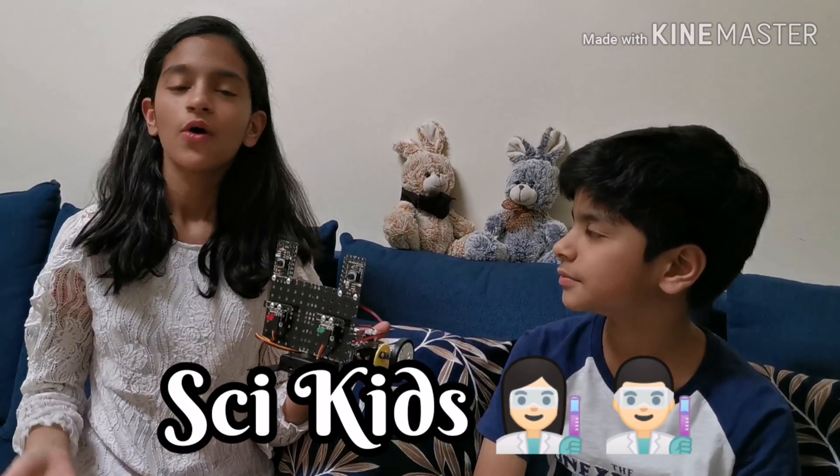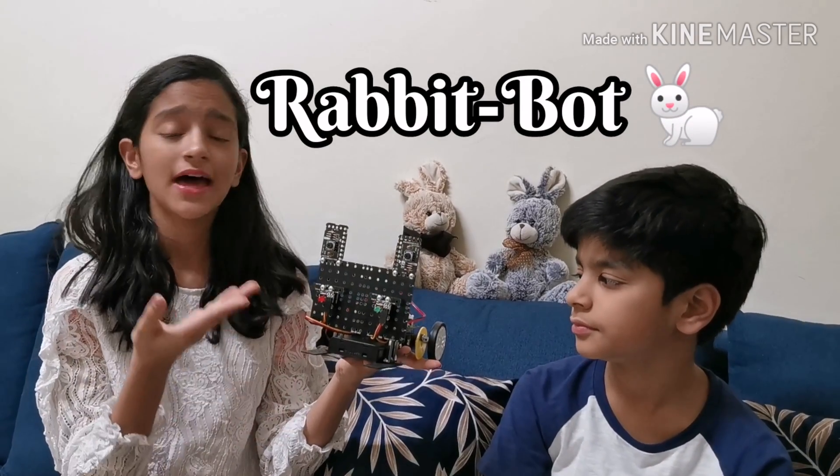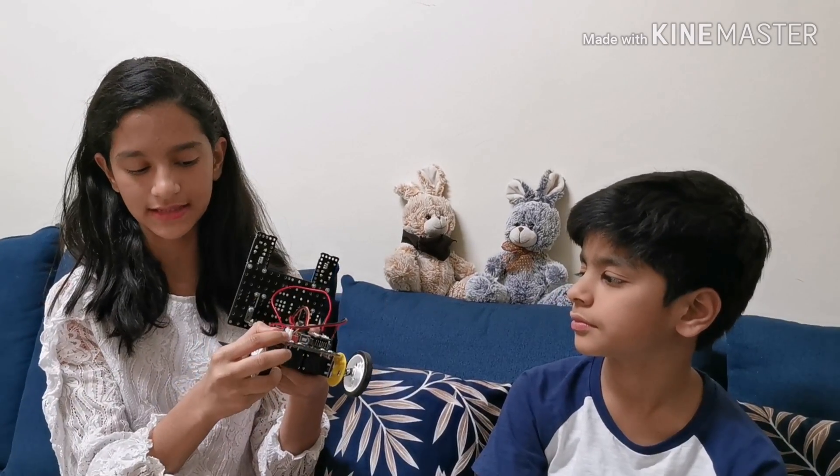In our previous episode, we made the housebot. But it didn't show any movement. It only had three LED lights which used to blink. Well, in our new robot named rabbit bot, it can move with the help of its wheels.